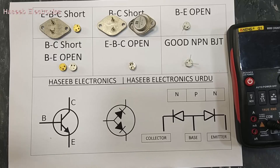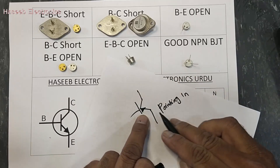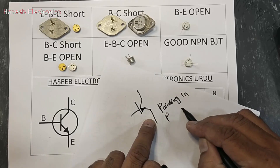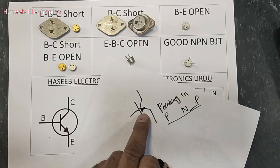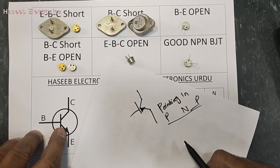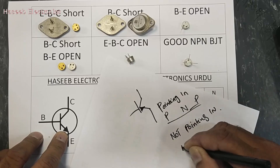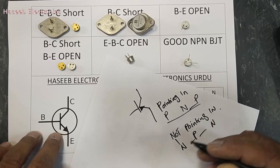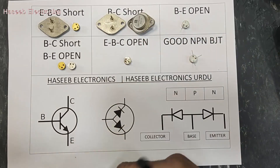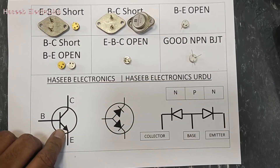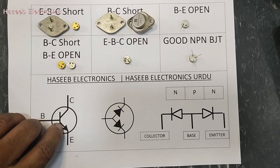The emitter arrow is pointing out — it is not pointing in. If we have a PNP transistor the arrow is pointing in, representing P-N-P. If the arrow is pointing in, it is PNP; if it is not pointing in — pointing out — it is NPN. This is a key point to understand the symbol. If it is pointing in that means PNP; if not pointing in, it is NPN.